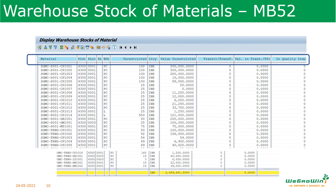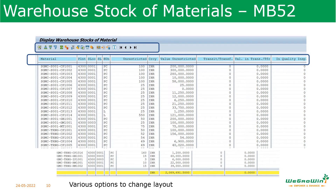The MB52 output shows the material, plant, storage location, unit of measure, unrestricted stock quantity, value in unrestricted stock, stock in transfer, and more columns. A sum is also shown at the bottom. Like in COOIS, there are many options here — export to Excel, change the layout, sort columns in ascending or descending order.